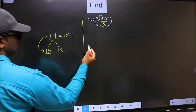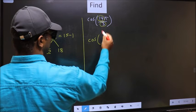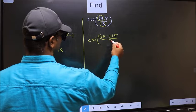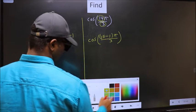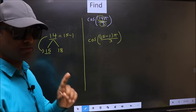So this will become cos, in place of 14, now I write 15 minus 1, π by 3. This is your step 1.